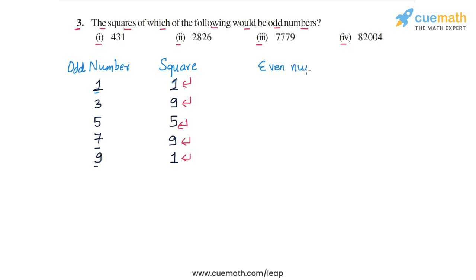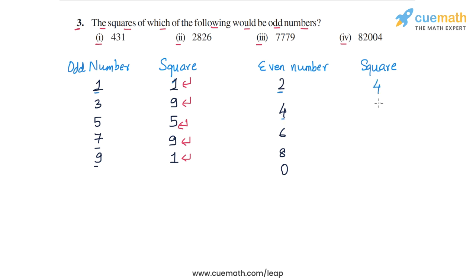What about even numbers? The ending digit of an even number could be 2, 4, 6, 8, or 0. The ending digit of the square would be: 2 squared gives 4, 4 squared is 16 so gives 6, 6 squared is 36 so gives 6 again, 8 squared is 64 so gives 4, and 0 squared is 0. So the ending digit of the square of an even number will always be even, and the square of an even number will surely be even.